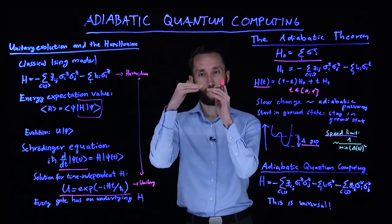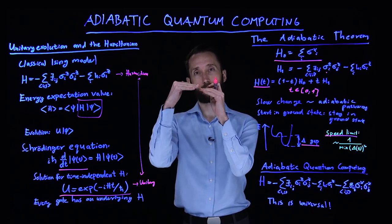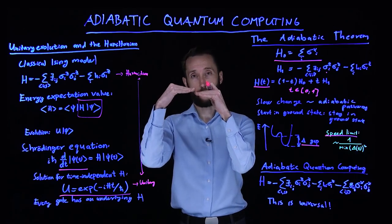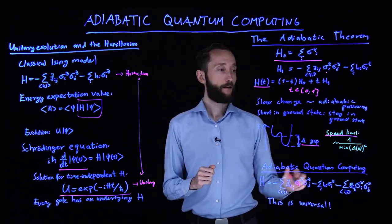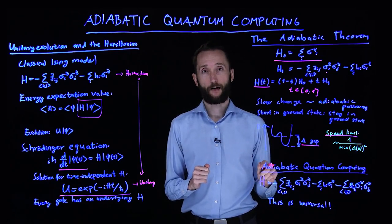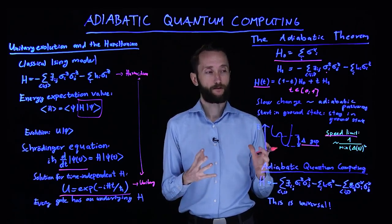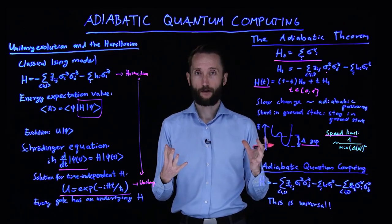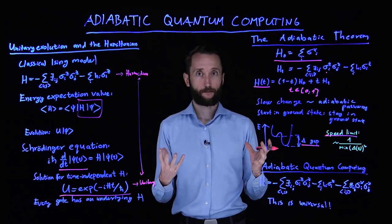So if there's a very close case of the excited state being very close to the ground state, then the speed limit can be very, very bad. So it's not true that you can solve NP-hard problems faster or exponentially faster.